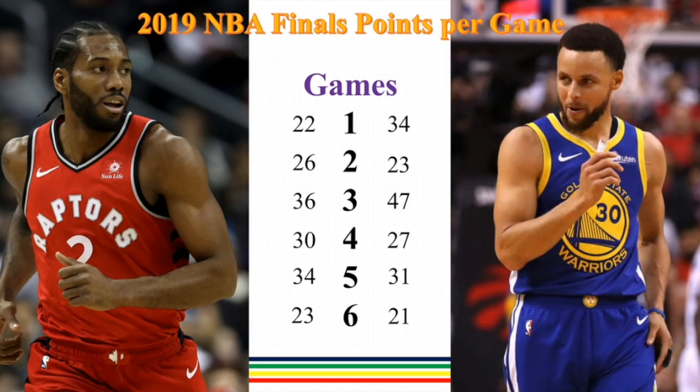This is an example of a comparison of the scores for each superstar for the last NBA Finals. These are their scores per game. Kawhi Leonard has 22, 26, 36, 30, 34, and 23. While Steph Curry has 34, 23, 47, 27, 31, and 21.